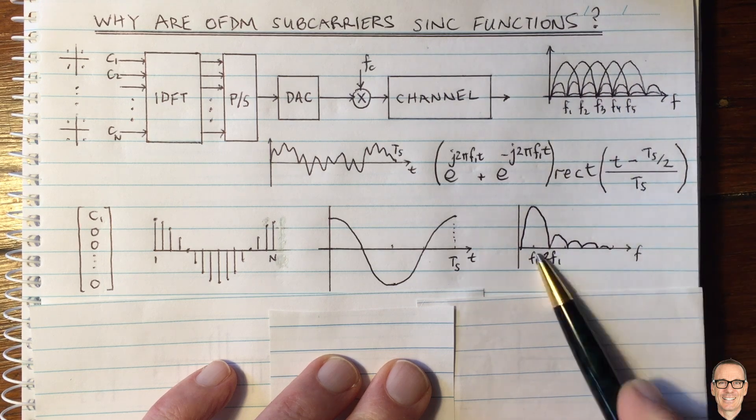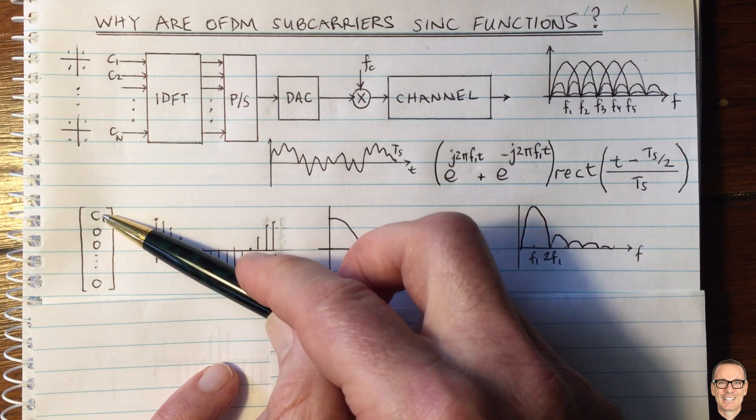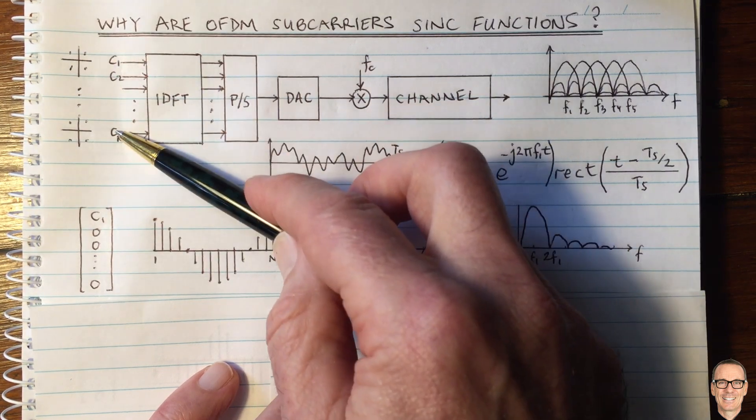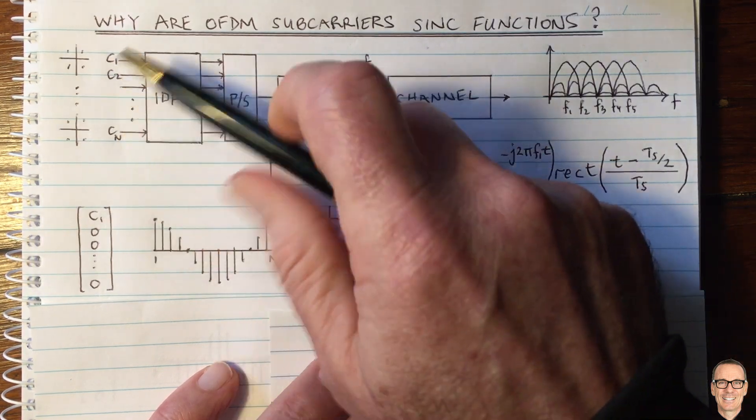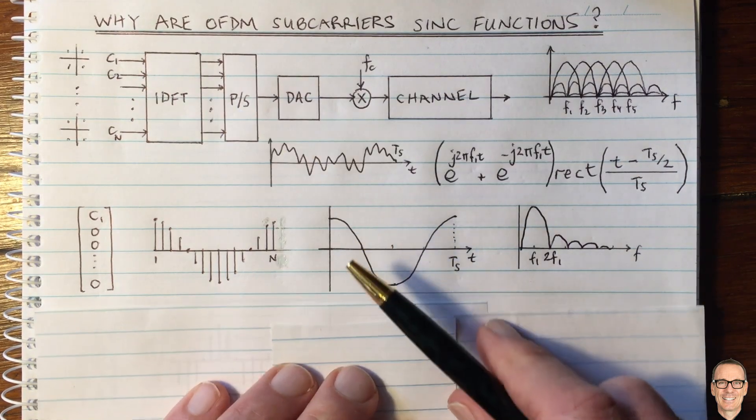So here we've got the waveform for F1. It's come about because we put an input in the first element of this vector. So let's think about what happens if we put an input in the second element, and all the rest are zero. So here we have this case here.